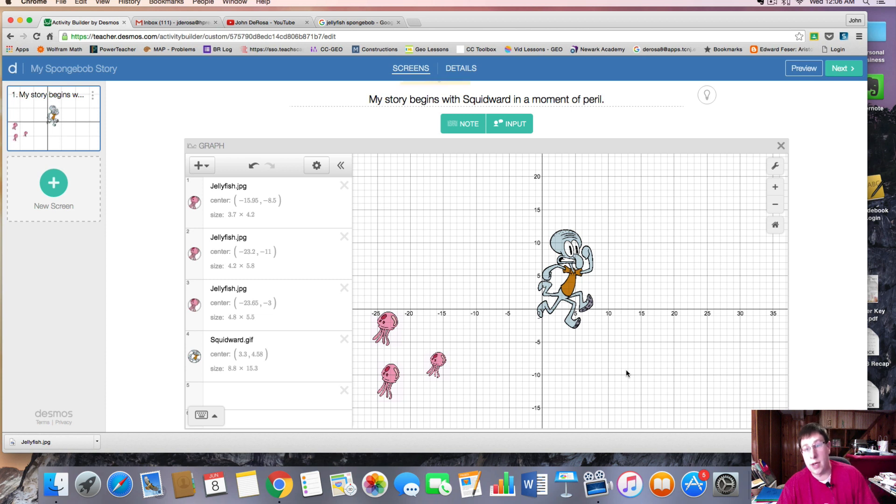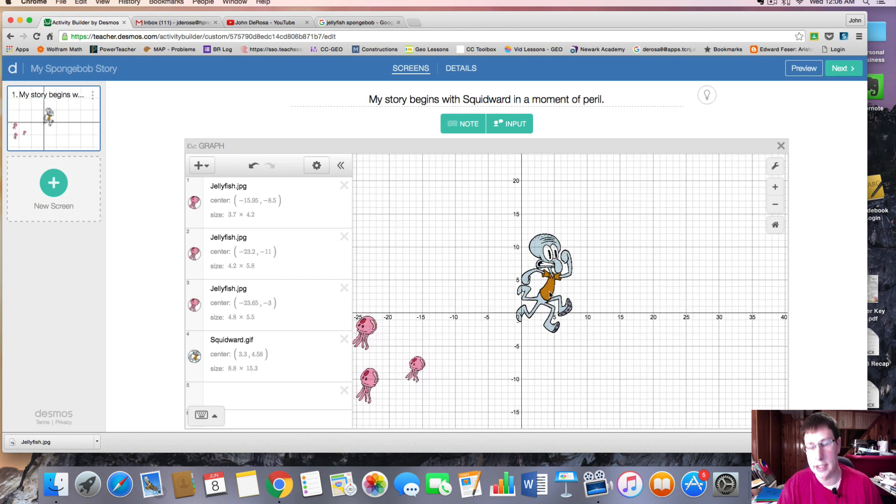Later on I'll show you how to set backgrounds and remove the axes so it really looks like a cartoon. But for right now, let's just show how we can make our images move and move towards acting out a scene. So Squidward's in a moment of peril. Let's say we want these jellyfish to be attacking him, or heading towards attacking him, and we want Squidward to be running away.